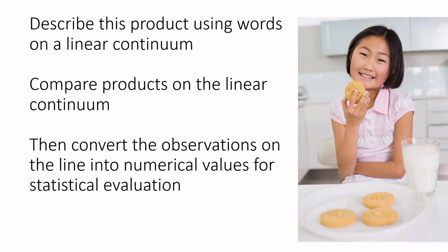We then jump forward into doing hedonistic work with attributes, asking is this attribute in the product and how much do you like it — from dislike extremely to dislike slightly. We also did just-about-right scoring. Now we are putting the attributes on a linear continuum — on a line scale — and we can compare those line scales, convert them into numerical values, and then do statistics on them. That's really what we're doing with descriptive analysis and quantitative descriptive analysis in particular.